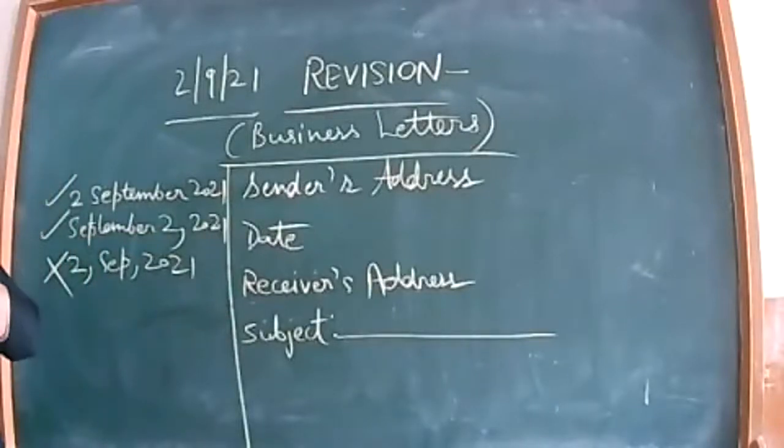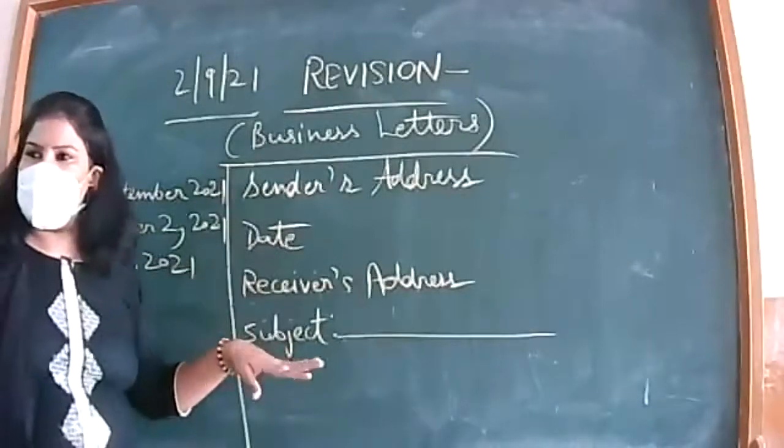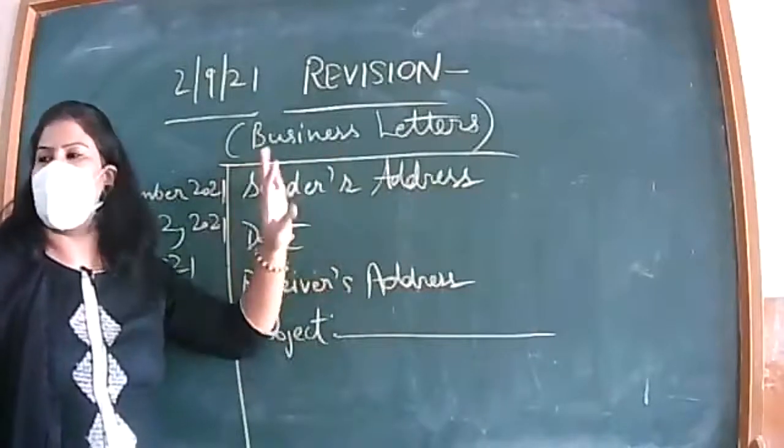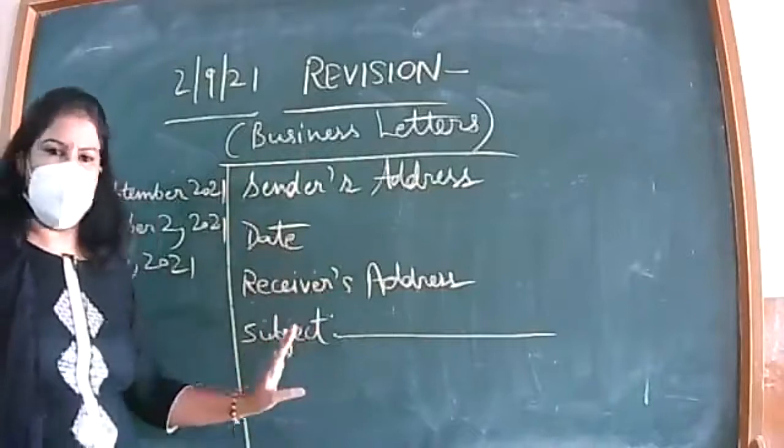So you should remember the order in which all these things come: sender's address, date, receiver's address, subject. Where do we write the subject? After the receiver's address, before the receiver's address, after the date, before the date. In that way, you should know each and everything.